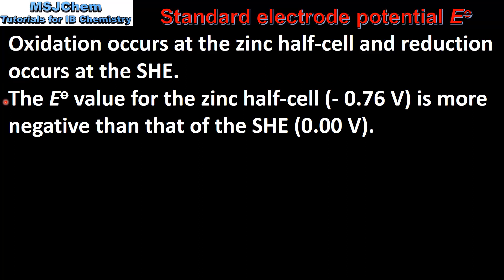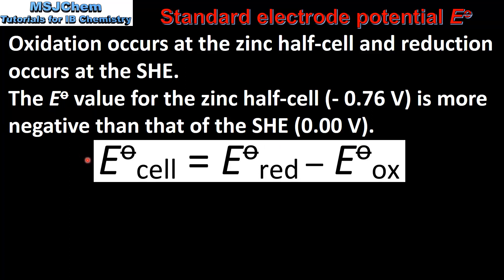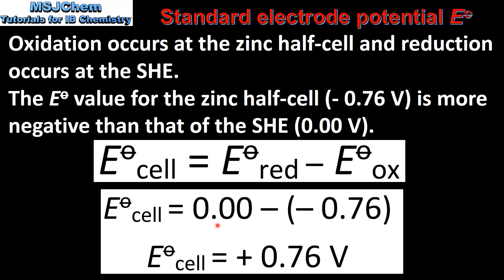This is because the standard electrode potential for the zinc half cell, which is −0.76 volts, is more negative than that of the standard hydrogen electrode. The cell potential — the voltage produced when the two half cells are connected — can be calculated as the standard electrode potential of the half cell undergoing reduction minus that of the half cell undergoing oxidation. Reduction occurred at the standard hydrogen electrode (0 volts) and oxidation at the zinc half cell (−0.76 volts), giving a cell potential of +0.76 volts, matching the voltmeter reading.